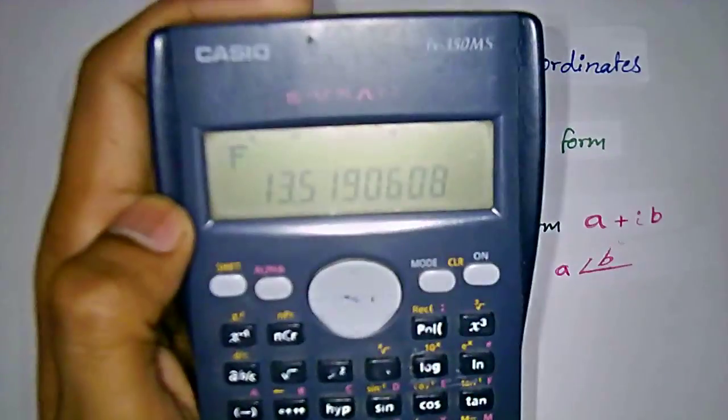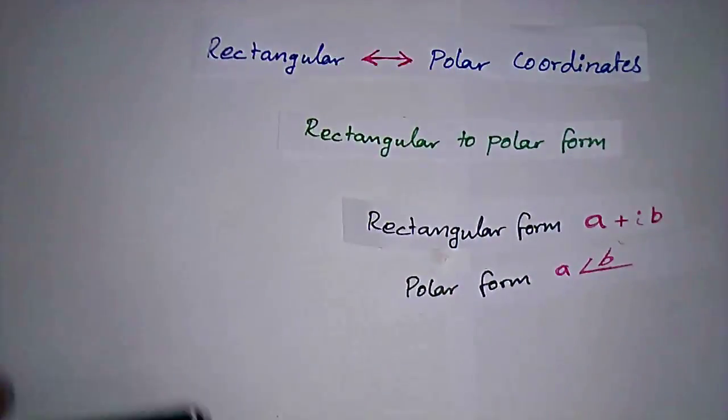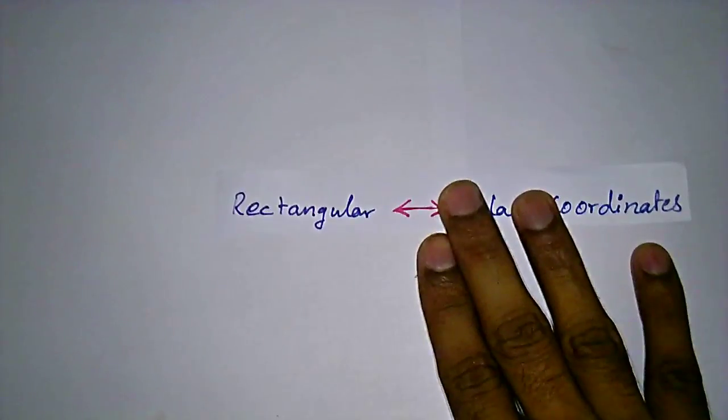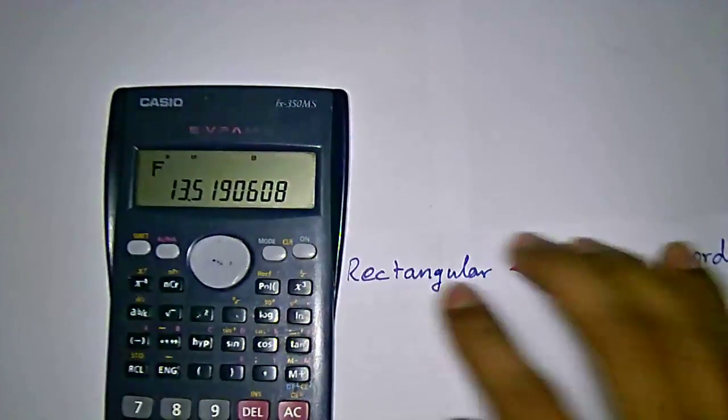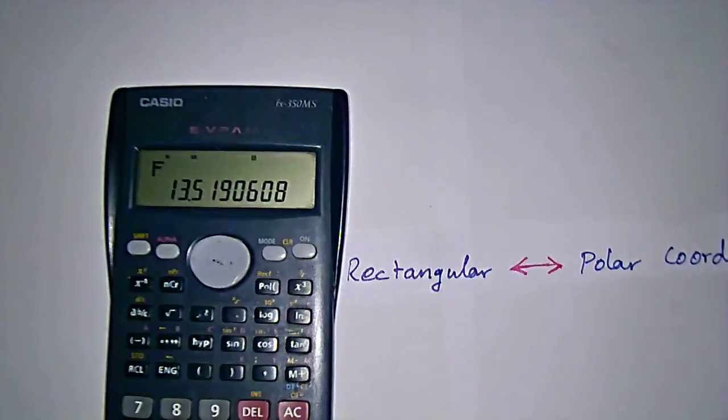This is how we are going to change the rectangular form to polar form using this kind of calculator. This is the basic scientific calculator, which is allowed in competitive exams.